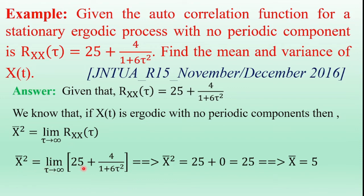Now substitute the value of τ→∞. The denominator term becomes infinity, so 4/∞ = 0. Therefore, E[x(t)]² = 25, and E[x(t)] = 5. This is the mean of the random process x(t).